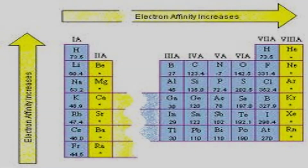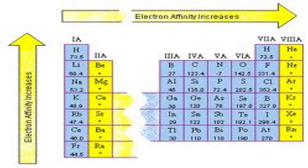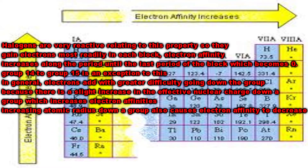Now to actually get into the trends described by periodic law. One property of atoms is electron affinity — this is the energy change when a neutral atom acquires an electron. Halogens are really reactive relating to this property, so they gain electrons most readily. In each block, electron affinity increases along the period until the last period of the block, which becomes zero. Group 14 to group 15 is the exception to this. In general, electrons add with greater difficulty going down the group because there is a slight increase in effective nuclear charge, which increases electron affinities. Increasing atomic radius down the group also causes electron affinity to decrease.